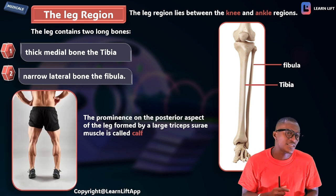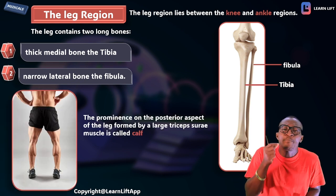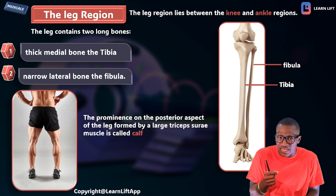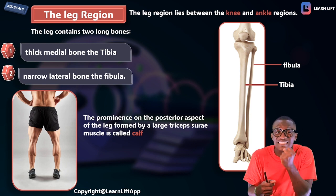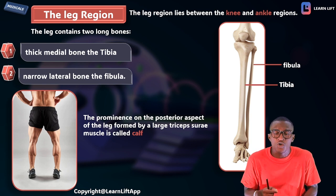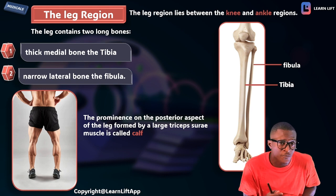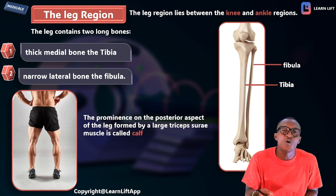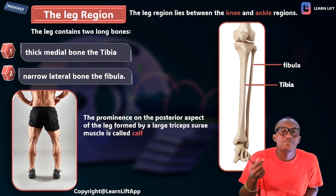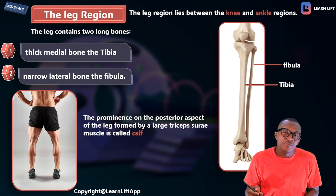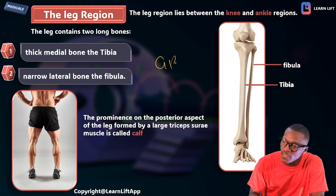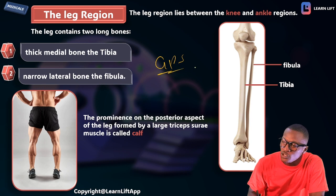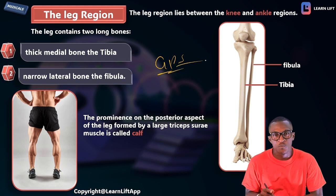At the posterior aspect of the leg, there is a prominence — a thick landmark — called the calf. The calf is formed by the triceps surae, which I call the GPS: the gastrocnemius muscle, the plantaris muscle, and the soleus muscle.